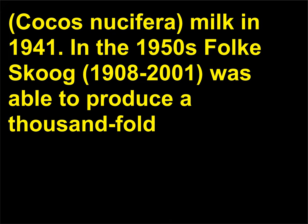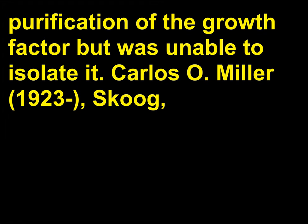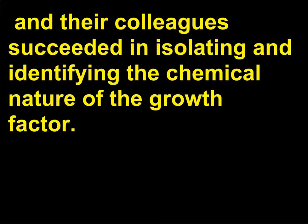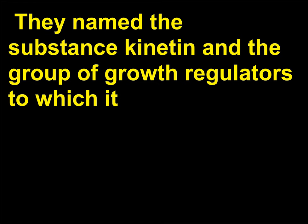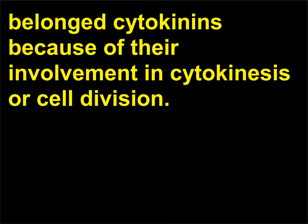In the 1950s, Folke Skoog (1908–2001) was able to produce a thousandfold purification of the growth factor but was unable to isolate it. Carlos O. Miller (1923) and Skoog and their colleagues succeeded in isolating and identifying the chemical nature of the growth factor. They named the substance kinetin and the group of growth regulators to which it belonged cytokinins, because of their involvement in cytokinesis or cell division.